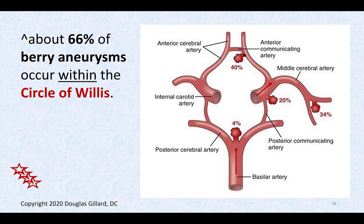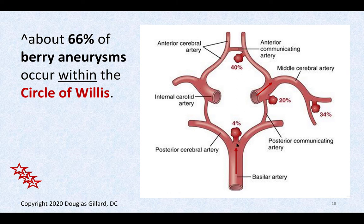40% of berry aneurysms occur at the junction of the anterior communicating artery and the anterior cerebral artery. You can see how the internal carotid artery dead ends and splits into the anterior cerebral artery and the middle cerebral artery. 30% can occur at the first bifurcation of the middle cerebral artery. 20% occur at the bifurcation of the posterior communicating artery with the internal carotid artery. 4% occur down at the junction of the basilar artery with the two posterior cerebral arteries.